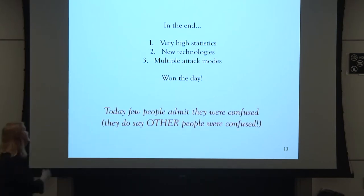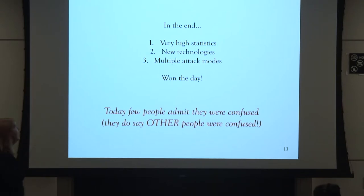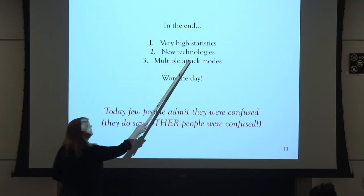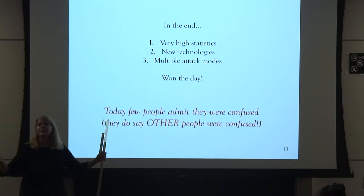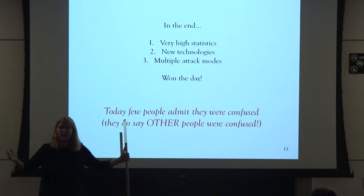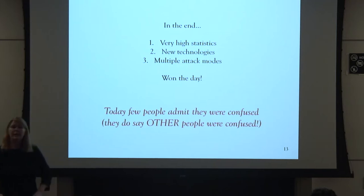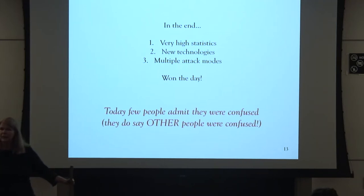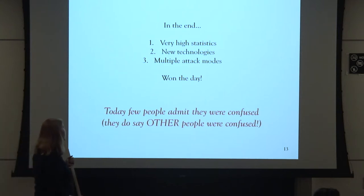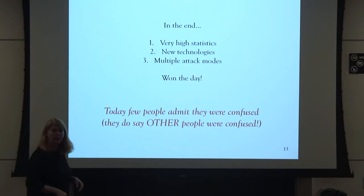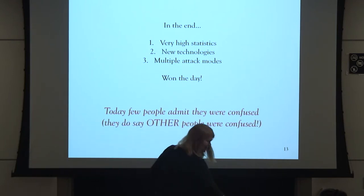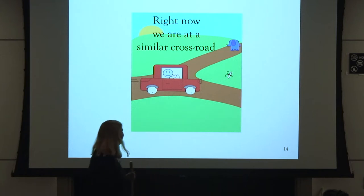In the end, very high statistics from the next generation experiments won the day, along with new technologies required to build something like Super-K. We really needed multiple attack modes — KamLAND playing against SNO, playing against Super-K. Today a few people admit they were confused, but they all say other people were confused. Right now, I feel like we're at a similar crossroads in our field.